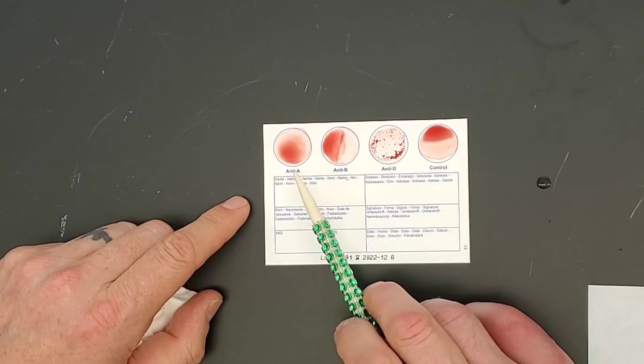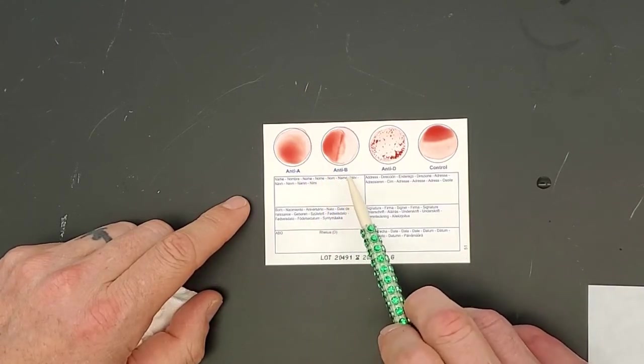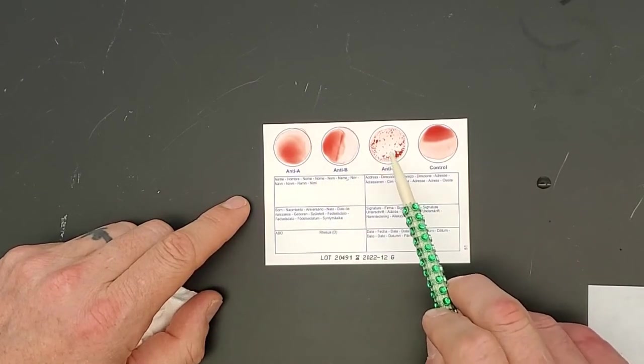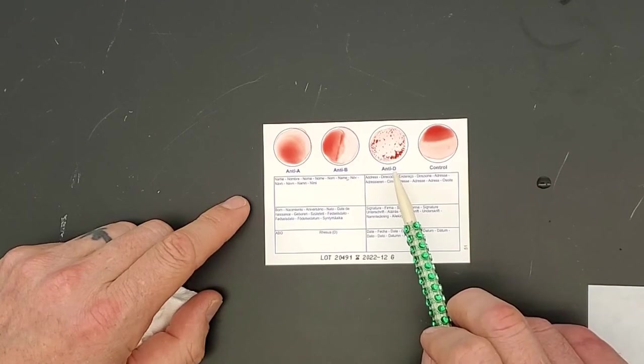So far, what we have is, because there's no A and no B, this blood type is O, RH positive. So I am O positive blood type.